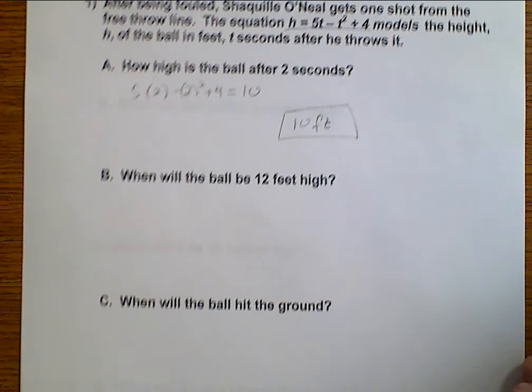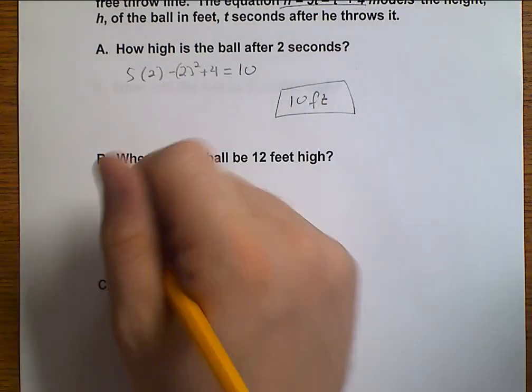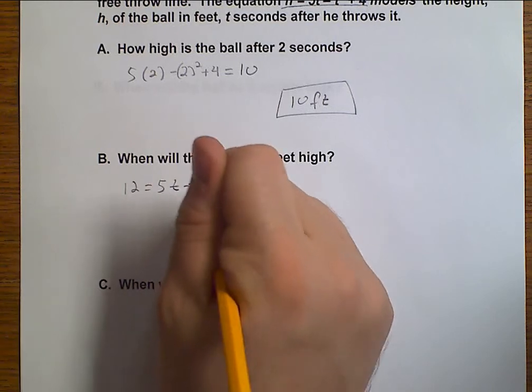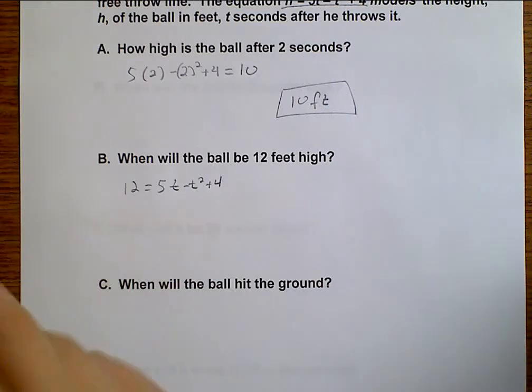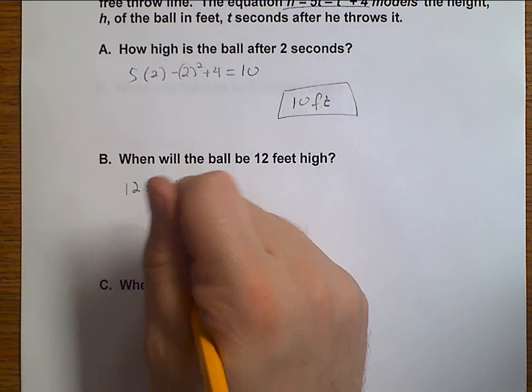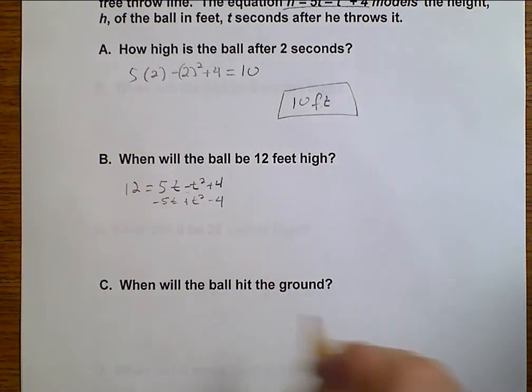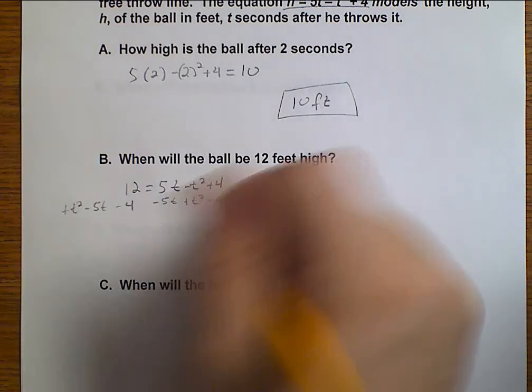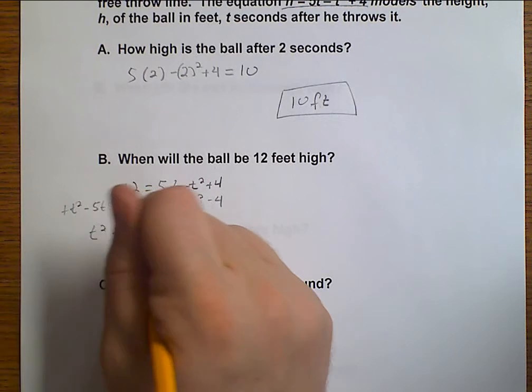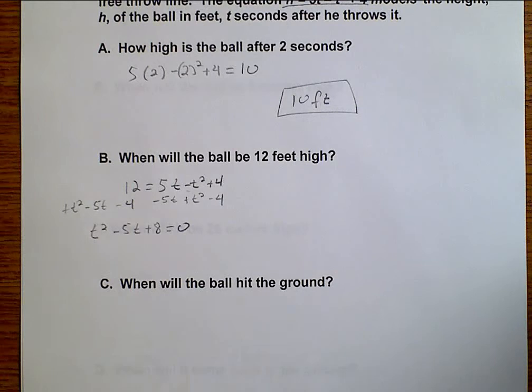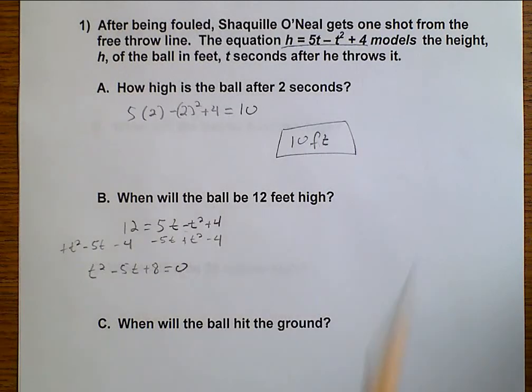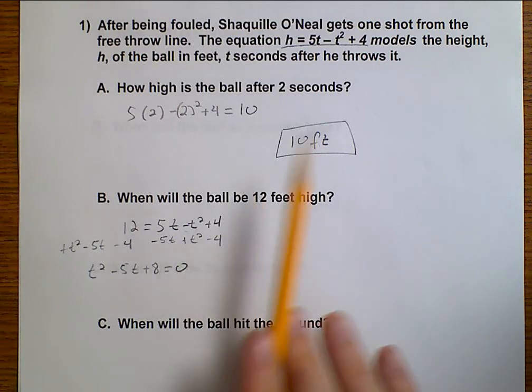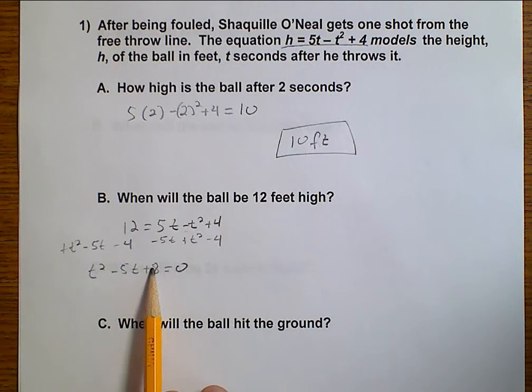When is it going to be 12 feet in the air? That means that 12 equals 5t minus t squared plus 4. I want everything to be on the left hand side because I want a positive t squared. So that means I'm going to subtract 5t, add t squared, and minus 4. That gives me t squared minus 5t plus 8 equals 0. Because Shaquille O'Neal, this whole plus 4 up here is because Shaquille O'Neal is tossing it already from 4 feet up. So when he starts his throw, that ball is already 4 feet high. And so that's where that plus 4 came into, which is why this looks a little bit different. It's not the 12 that we would have had yesterday. It's 8 because this 4 has already been accounted for.